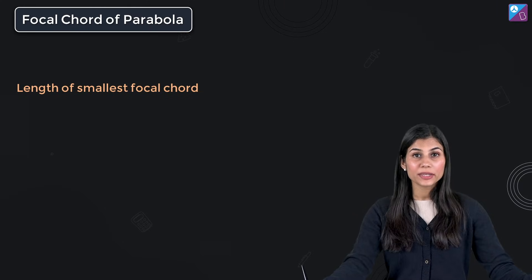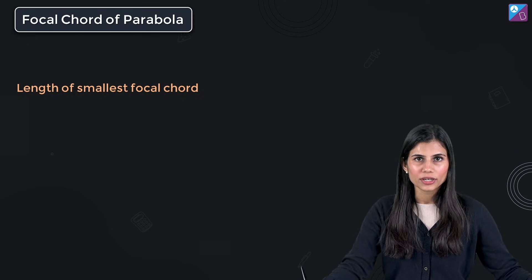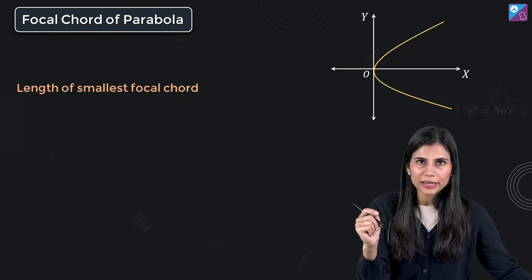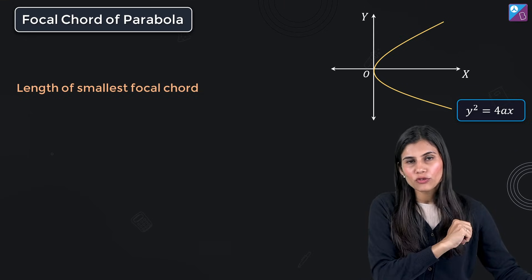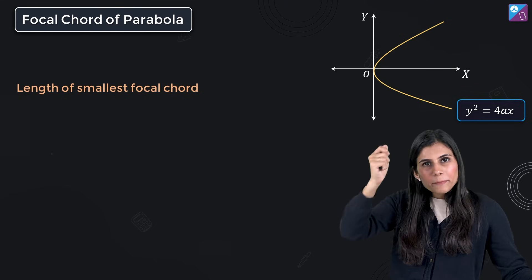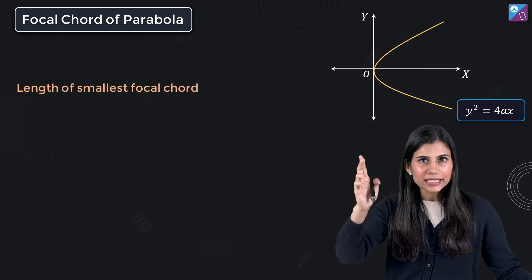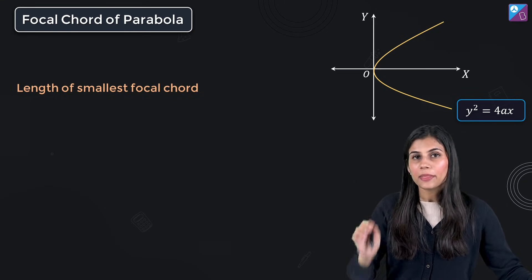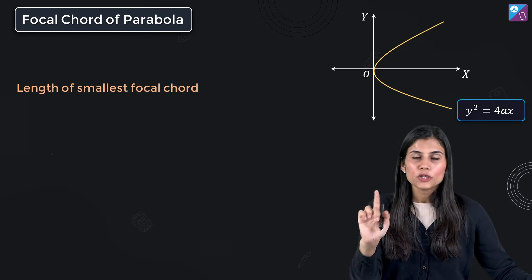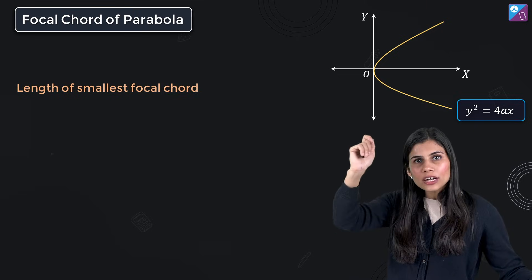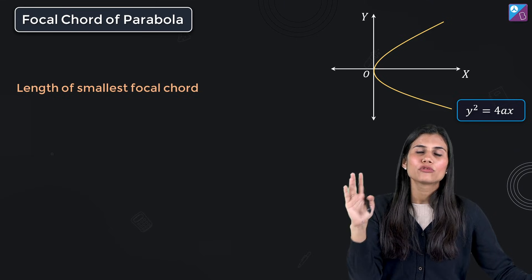Now let's move to something extremely important for your JEE exam: properties of a focal chord. A focal chord is any chord of the parabola that passes through the focus. A very beautiful property is that if PQ is a focal chord with P having parameter T and Q having parameter T', then T and T' are reciprocals of each other — the product of the parameters of the extremities of the focal chord always equals -1... that is, equals 1.